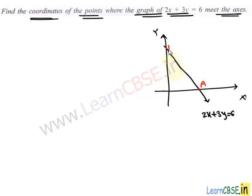We take A and B as the two points where the graph meets the x-axis and y-axis respectively. To find these coordinates, we know that the distance of point A from the x-axis is 0. Therefore its y coordinate must be 0, and we find its x coordinate using this equation. Similarly, B lies on the y-axis, so its distance from the y-axis is 0, meaning its x coordinate is 0, and we have to find its corresponding y coordinate.